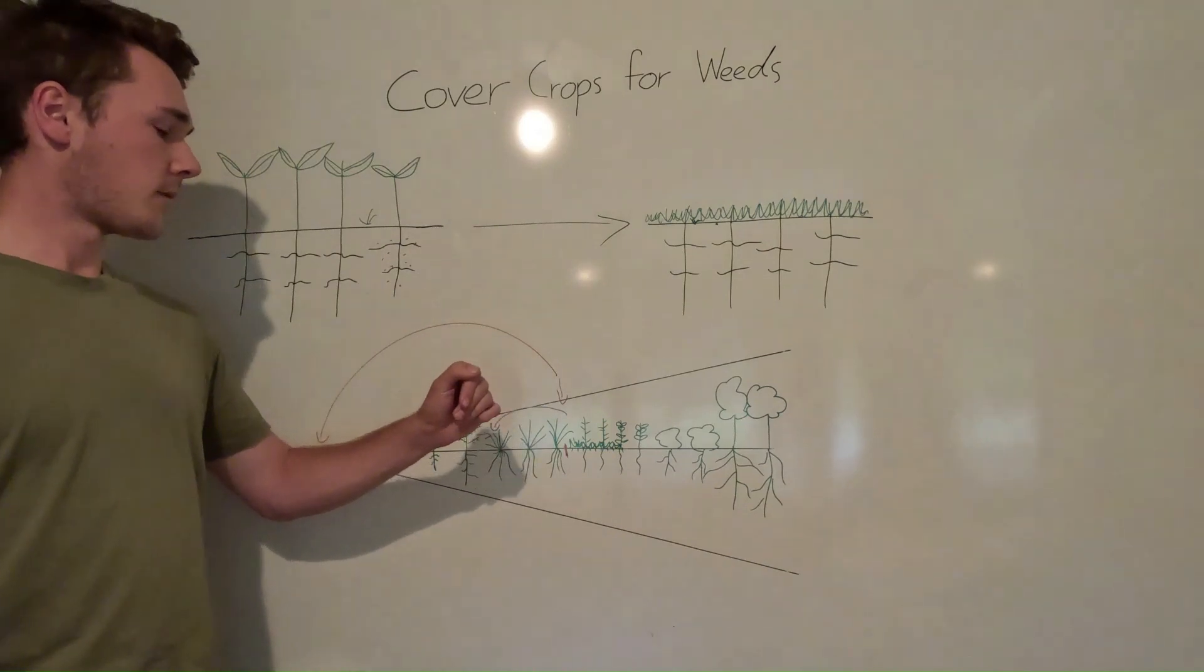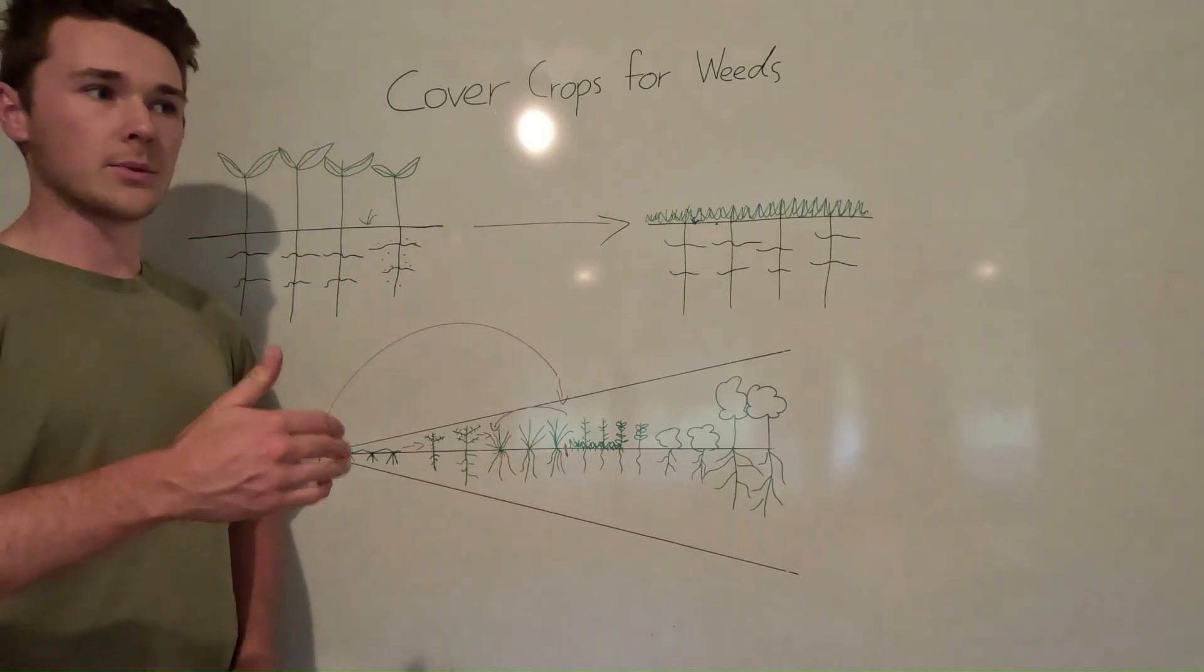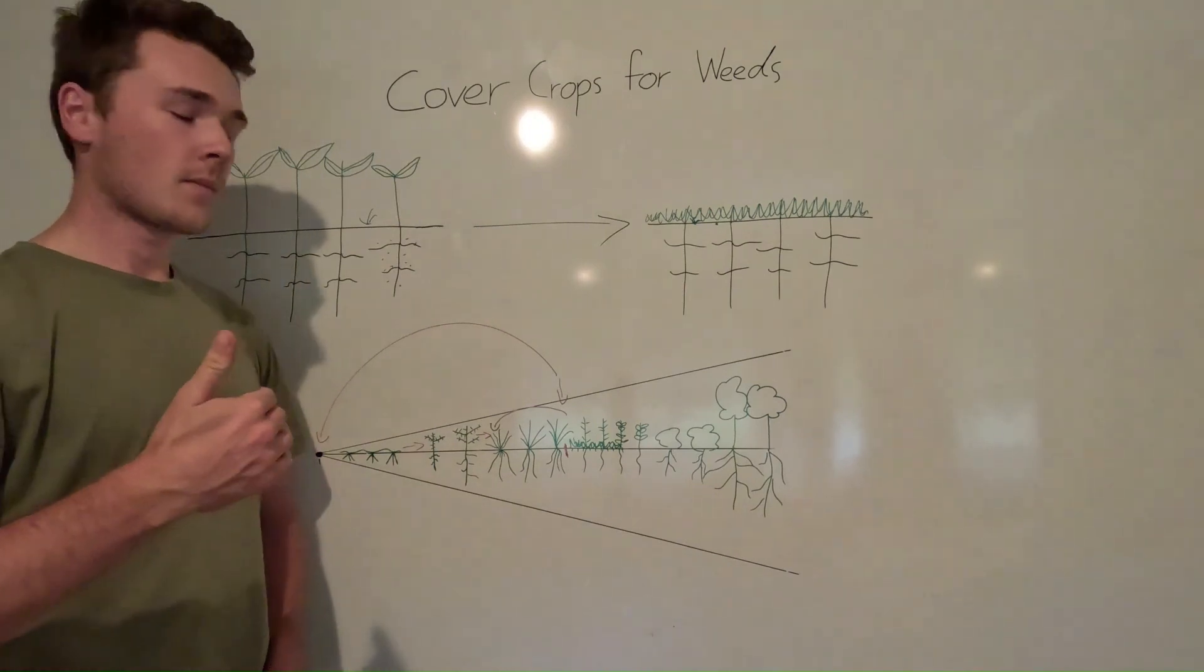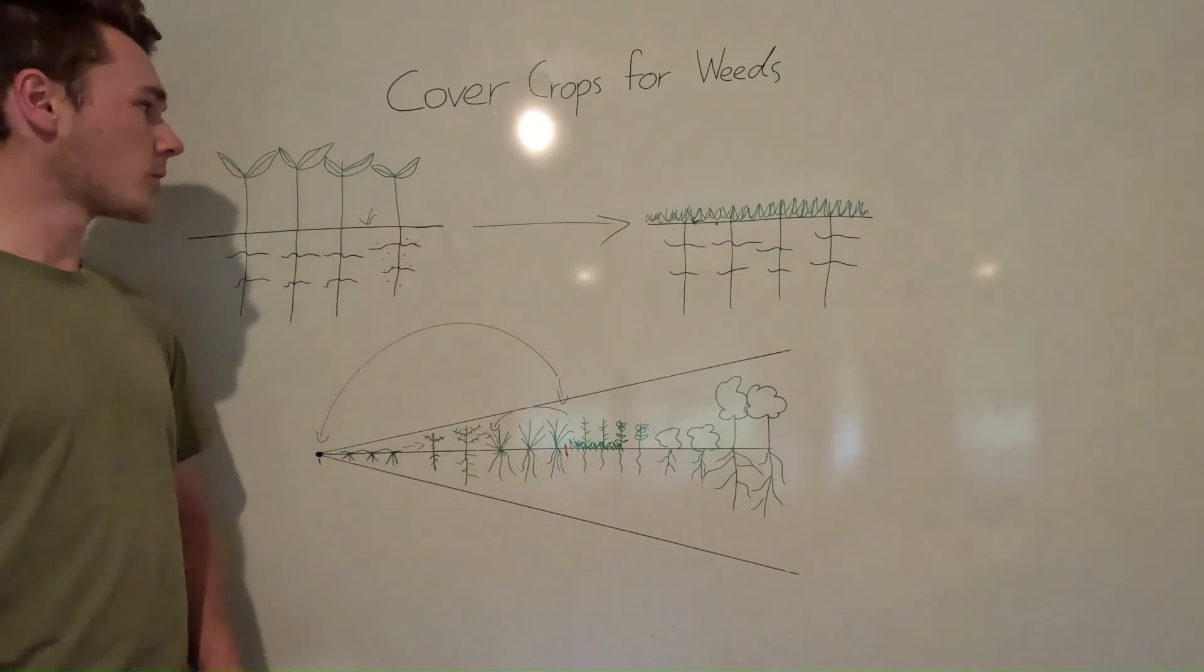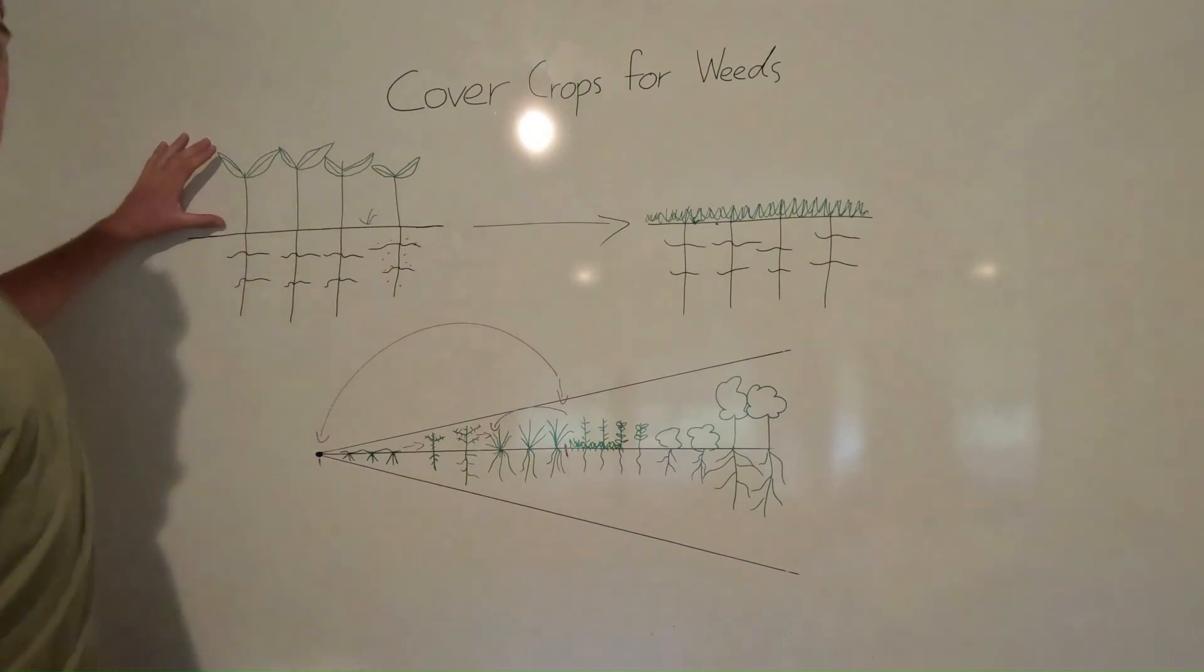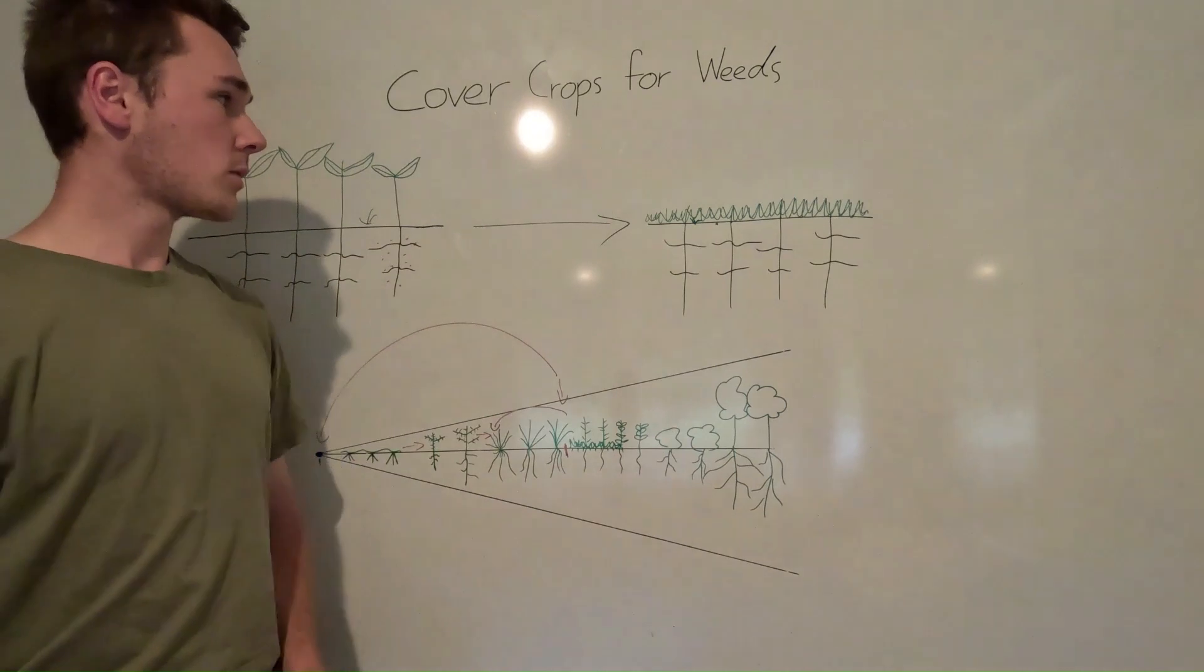And so cover cropping allows for essentially this. It builds our soils to the point where we are able to grow crops in better soil conditions. It also creates cover which suppresses weed germination and growth in both the growing stage and the termination stage, which forms this really nice mulch.